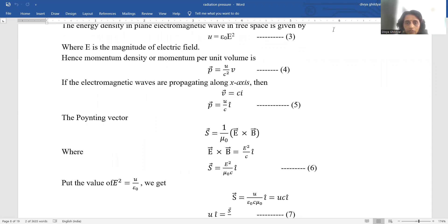And EMT wave travels with speed of light. So we have written c here. So here we will put the value of v equal to ci. So this c when you will put v equal to ci here, one c and one c will get cancelled and p will become equal to u upon ci.